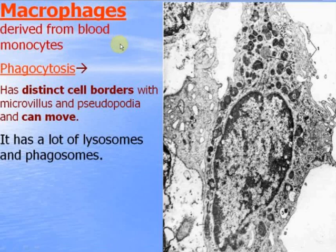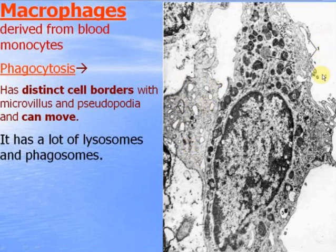Macrophages are derived from blood monocytes. Their main function is phagocytosis and presentation of antigen on the surface to lymphocytes. They have distinct cell borders, microvilli, and pseudopodia for phagocytosis. They can catch bacteria and foreign particles and digest them using the enzymes of numerous lysosomes. You can find here numerous lysosomes and phagolysosomes.